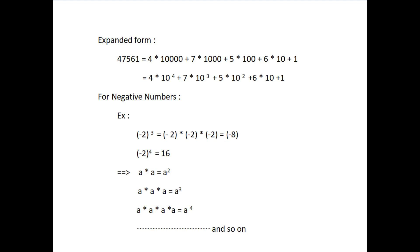Instead of taking a fixed number, let us take any integer and write the number as a into a equal to a to the power 2. This can be read as a squared or a raised to the power 2. Another example: a into a into a equal to a to the power 3, which can be read as a cubed or a raised to the power 3. Further, a into a into a into a is equal to a to the power 4, and so on.